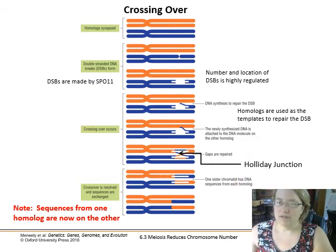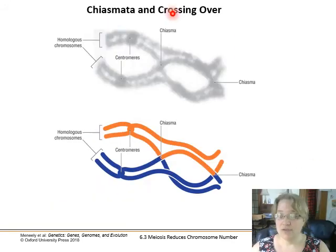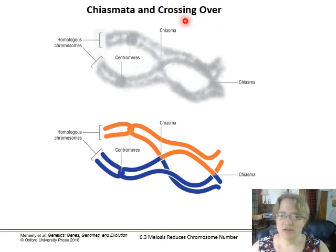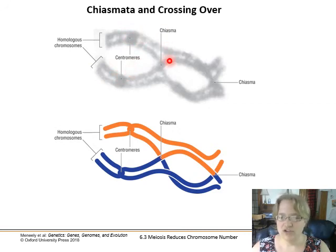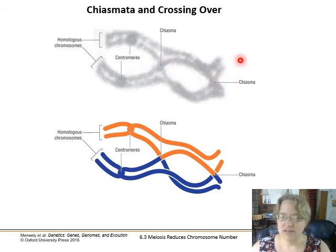Thanks to electron microscopy we can actually see this in DNA molecules. Here we see the tetrad — two homologous chromosome pairs lined up — with the darker centromere regions where the sister chromatids are attached, and two instances of chiasmata visible between the various DNA strands.